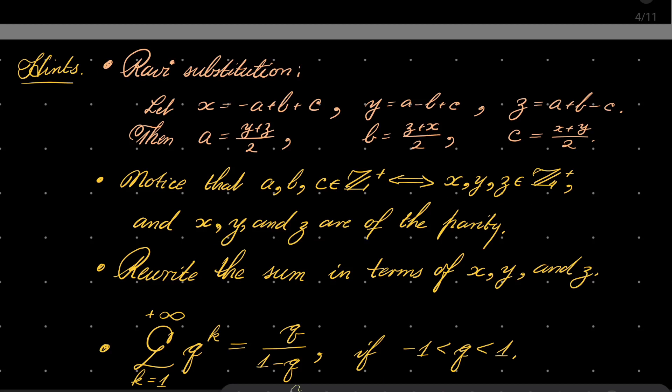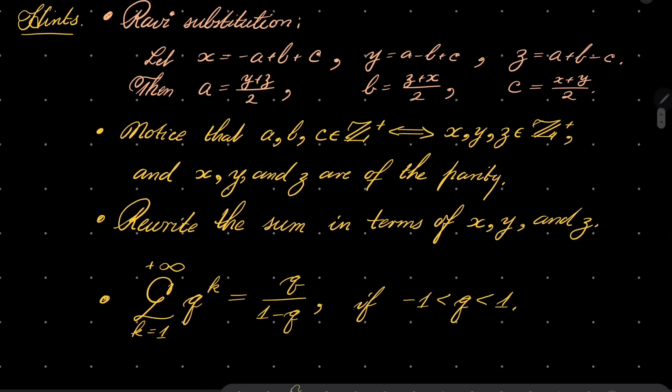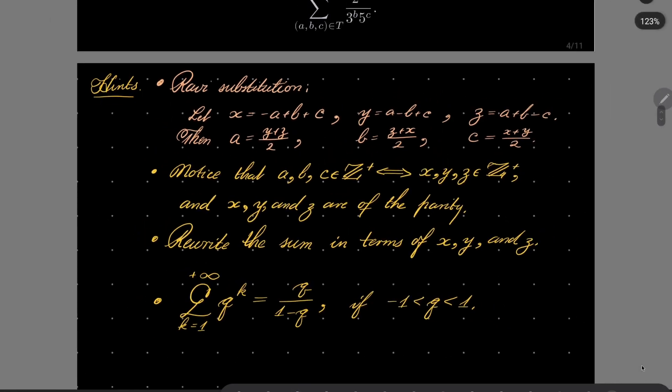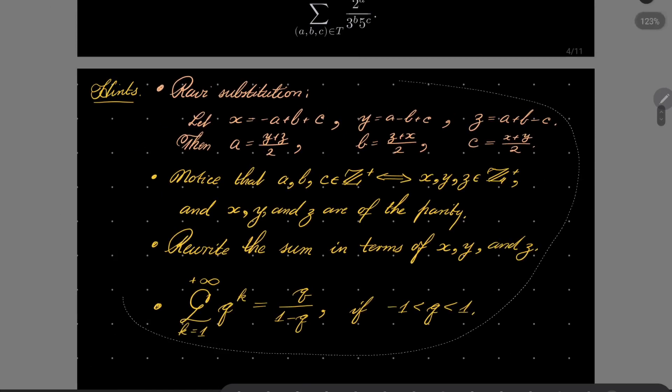And just take our sum, rewrite it in terms of x, y, and z, and also keep in mind this well-known formula for the sum of geometric progression. The series from k equals 1 to infinity of q to the power of k can be written as q over 1 minus q, if q of course is between -1 and 1. Give this problem a try and I will see you in just a minute.